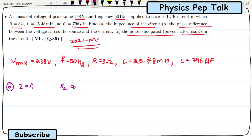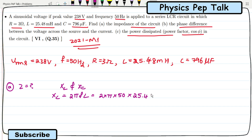To find impedance Z, I need XL and XC. XL is equal to 2 pi FL, which is 2 into pi into 50 into 25.48 into 10 power minus 3. The value of XL is found to be 8 ohms. Next, XC is equal to 1 by 2 pi FC, which is 1 by 2 into pi into 50 into 796 into 10 power minus 6. The value of XC is found to be 4 ohms.